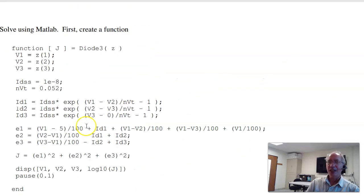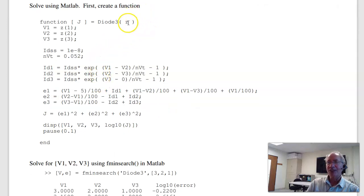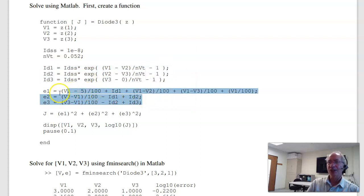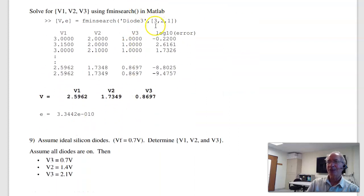This is where Fmin search really shines. I'm going to create a function called diode 3. I'm going to guess, pass vector Z. That contains 3 elements, which I'm going to interpret as being V1, V2, V3. Once I know the voltages, I can calculate the currents through the diodes. I can now write the voltage node equations. The current should sum to 0, if done correctly. If incorrect, there's some error. It's not 0. My cost is the sum squared error. Display it just for fun. And repeat. Now I can solve using Fmin search. I'm going to guess the voltages are 3 volts, 2 volts, 1 volt. Go. And so here's my initial guess. There's the log 10 of the error. Keeps on going, and eventually winds up saying, here's the best I could do. 2.59 volts, 1.73 volts, 0.86 volts. So that's the solution using numerical methods.